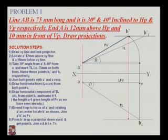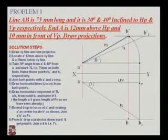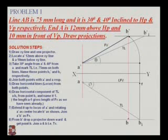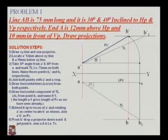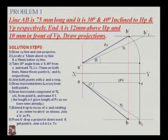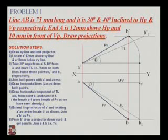Extend the vertical line downward from point B-dash to the locus of point B1. Consider the intersection point as point B. Join line A to B — this will be the projection of the top view.